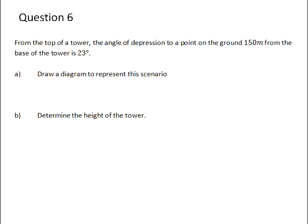And then finally, question 6. From the top of a tower, the angle of depression to a point on the ground 150 meters from the base of the tower is 23 degrees. The first step is to draw a diagram to represent this. So whenever we're talking about a tower and the ground, we know that the ground represents the horizontal, and the tower will be on the vertical, and we know that the ground and the tower will make a 90 degree angle with each other.